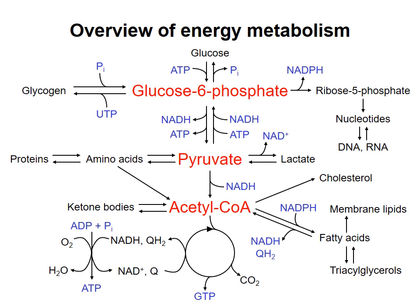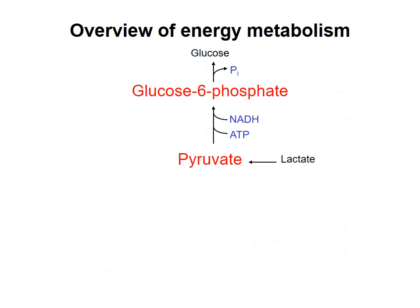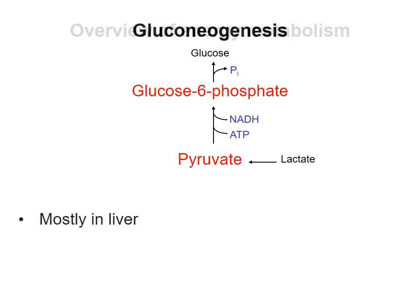In this video, I'll talk about how pyruvate and other molecules can be used to make glucose in a process called gluconeogenesis. Whereas glycolysis, the oxidation of glucose to pyruvate, takes place in all of our cells, gluconeogenesis takes place mainly in the liver.